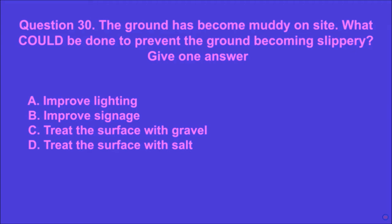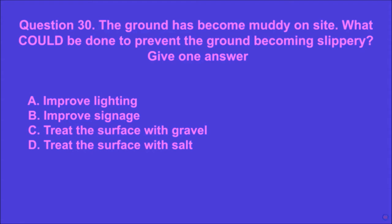Question 30: The ground has become muddy on site. What could be done to prevent the ground becoming slippery? Give one answer. A: improve lighting, B: improve signage, C: treat the surface with gravel, D: treat the surface with salt. C is the correct answer.